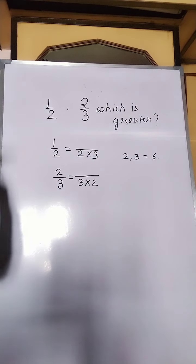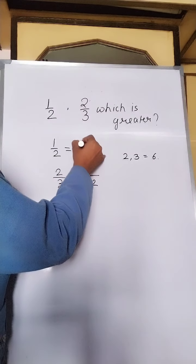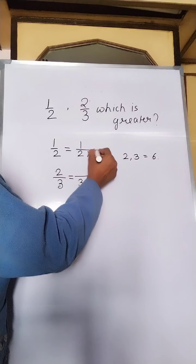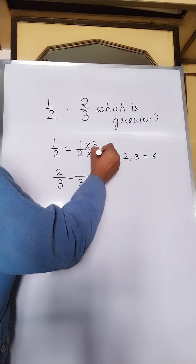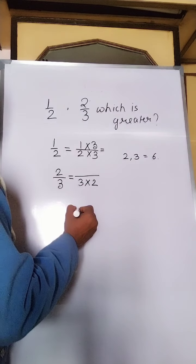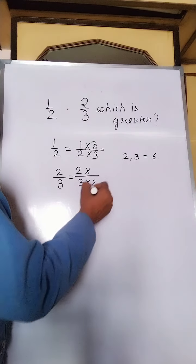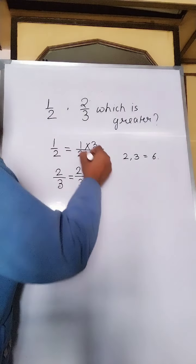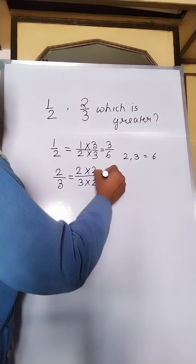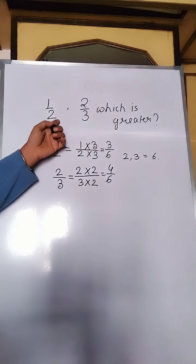Now, what you will do is, you will multiply the numerator with the same factor. With the same factor with which we are multiplying the denominator, that factor you have to use to multiply the numerator also. In case of the second fraction also, you have to multiply the numerator with the same factor which you have multiplied in the denominator. So 2 into 2. So ultimately, you are getting 3 by 6 and here you are getting 4 by 6.